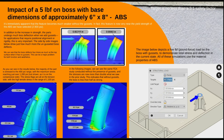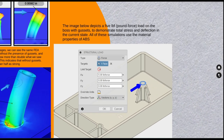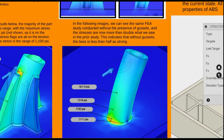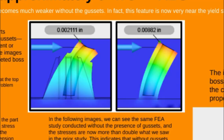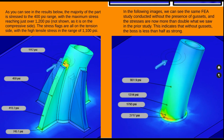Here is another FEA study conducted on a boss with gussets and without gussets. A 5 lbf force is applied on the same box material, both ABS. You can see that the deflection of the boss without gussets is approximately four times higher than the boss with gussets. The comparison of stresses also indicates that stresses on the boss without gussets are more than double what we see in the design with gussets.